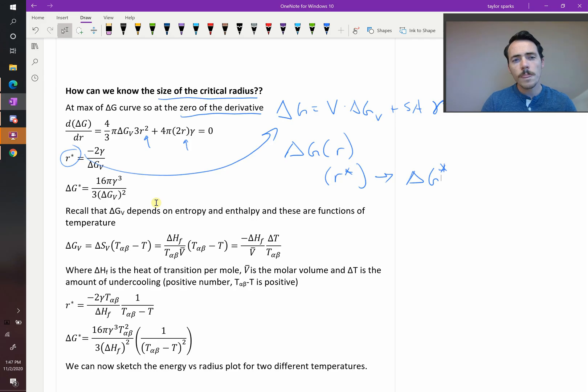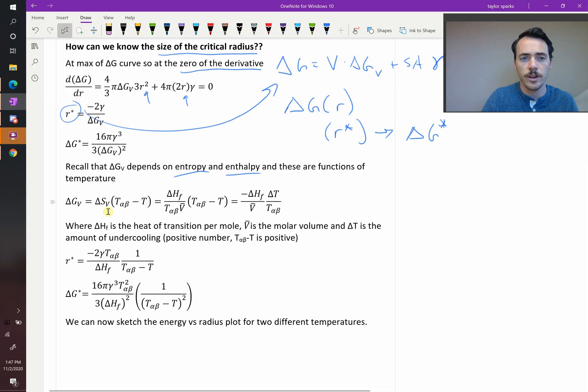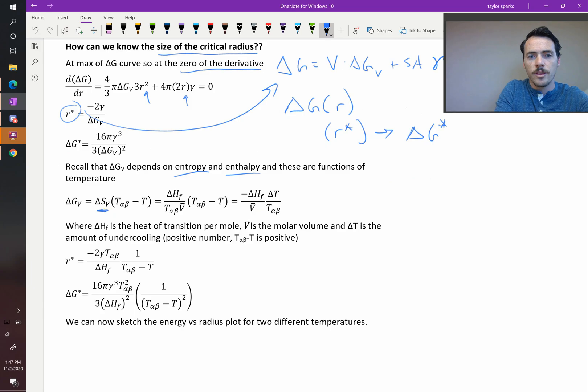Now, remember that the change in the Gibbs free energy on a volumetric basis itself depends on entropy and enthalpy components, and so if we wanted to we could rewrite delta G_V in terms of entropy, the change in the entropy on a volumetric basis, and the change in enthalpy, divided by its molar volume.